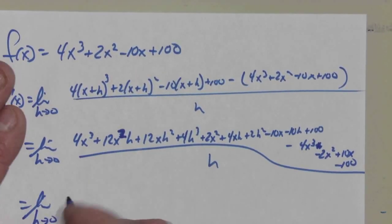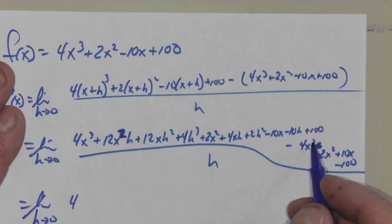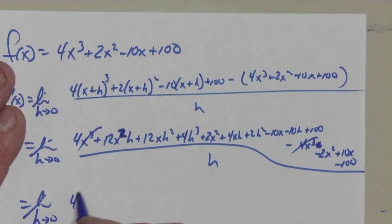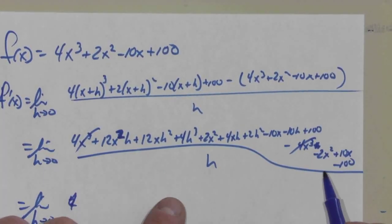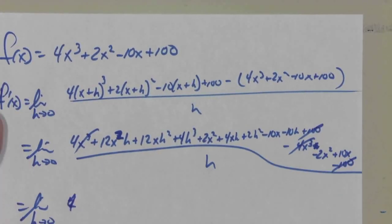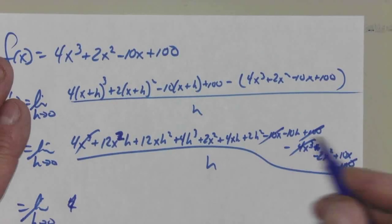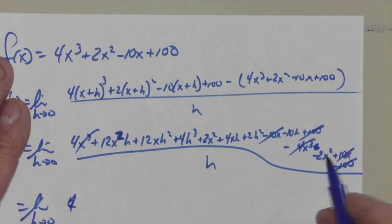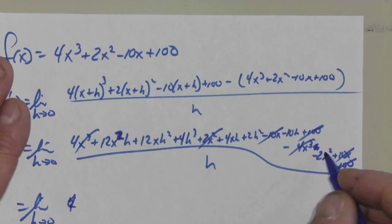Limit as h approaches zero. 4x to the third. Oh, that cancels. So I don't need that. What else cancels? Help me out. The hundreds. Gone. What else? 10x. What else? 2x squared.